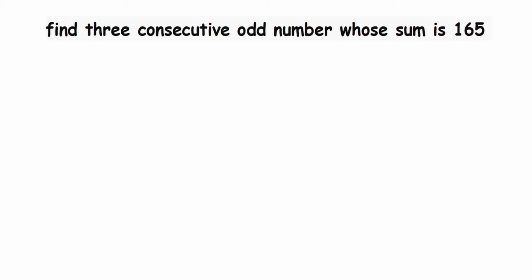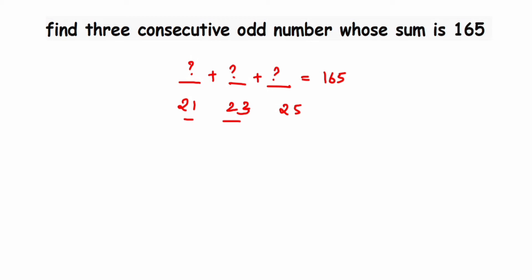We need to find three consecutive odd numbers — for example, 21, 23, and 25 are three consecutive odd numbers. We have to find three consecutive odd numbers such that when we add them the sum equals 165. These numbers are unknown to us, so we are going to assume a variable x.